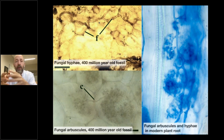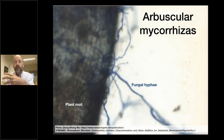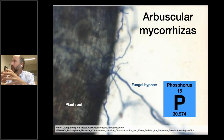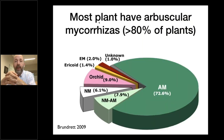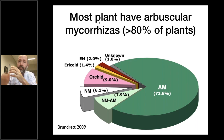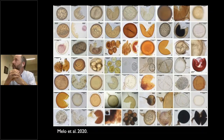Arbuscular mycorrhizae work by forming structures within the plant root, but then extending from the plant out into the soil with fungal hyphae. Those fungal hyphae are focused on taking up nutrients like phosphorus and bringing that nutrient back to the plant. Because arbuscular mycorrhizae are ancestral to all plants, more than 80% of all plants still have them. The fungi involved are pretty boring — there are only a few hundred species and they produce small spores in the soil, not something you'd ever see or notice on a day-to-day basis, despite being pretty much everywhere.